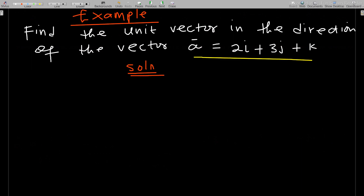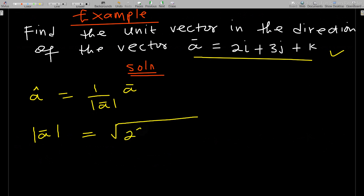The unit vector â is always given as one over the magnitude of a, times a. What we need is the magnitude of a, since we already know a. That is given as the square root of 2 squared plus 3 squared plus 1 squared.